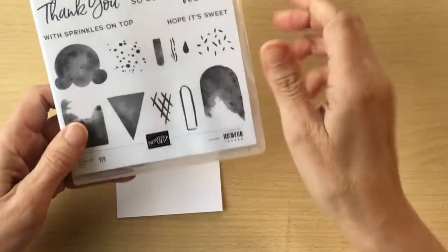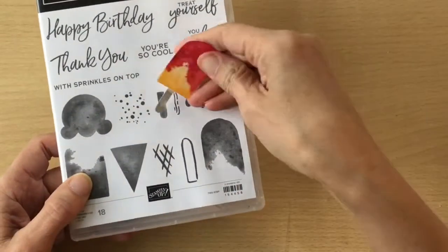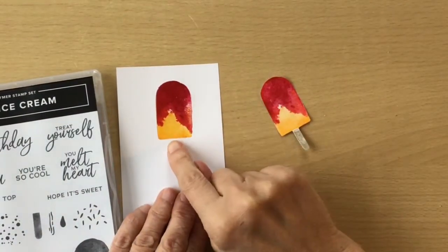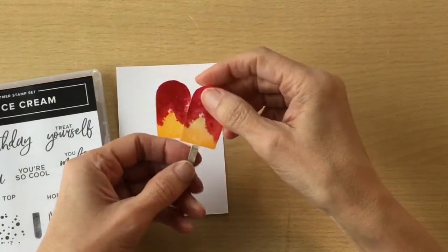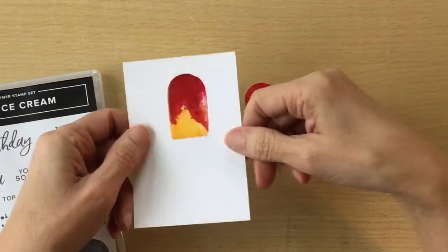And I've used this lolly stick and I've used Sahara Sand. I've already made one previously, so you can stamp your lolly stick now or you could have done it beforehand, or you could even stamp it separately and stick it on the back of your lolly. So what you actually got to do next is fussy cut that.